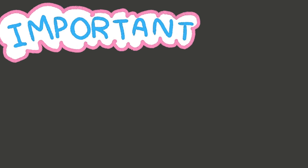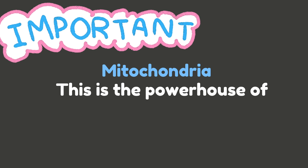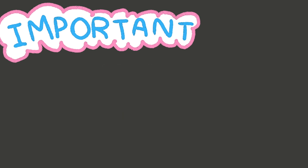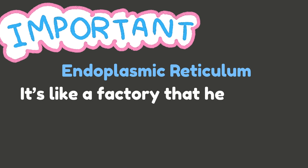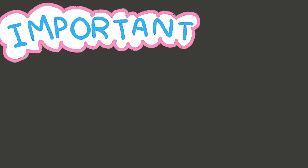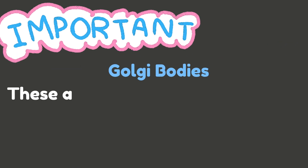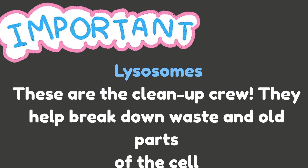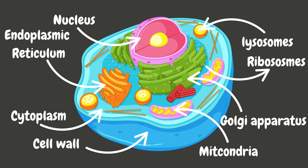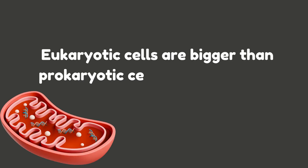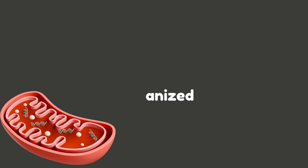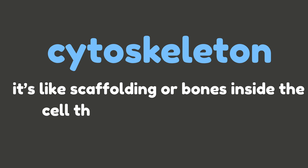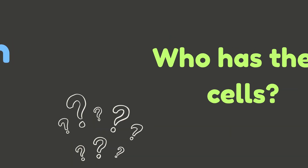Here are a few important organelles. Mitochondria — the powerhouse of the cell; it makes energy so the cell can work. Endoplasmic reticulum — like a factory that helps build proteins and fats. Golgi bodies — the mailroom, sorting and shipping proteins to where they need to go. Lysosomes — the cleanup crew; they help break down waste and old parts of the cell. Let's look at a diagram — every part is labeled. The small orange dots are the ribosomes. Eukaryotic cells are bigger and more organized, and they even have a cytoskeleton — like scaffolding or bones inside the cell that help it keep its shape.